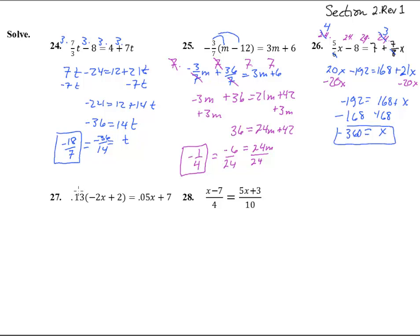Number 27, first take care of the parentheses, jump that through, and we get negative 0.26x plus 0.26 equals 0.05x plus 7. As I'm looking, we can add and subtract these, but I'd like to get rid of those decimals if I can. So I'm going to times everything by 100 to move it two decimal places. If we times by 100 here, we get negative 26x plus 26 equals 5x plus 700.